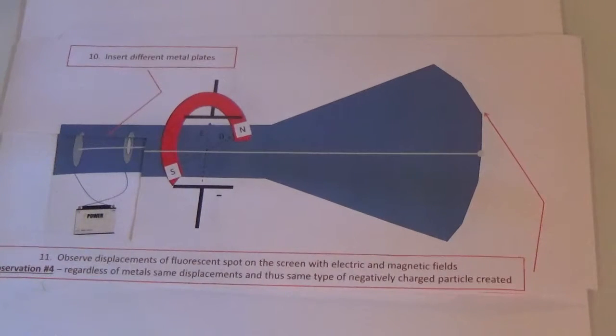The ray can be produced even if we used different types of metals. So, the negatively charged particles are the same regardless of the metal.